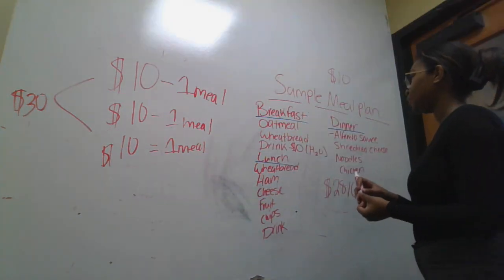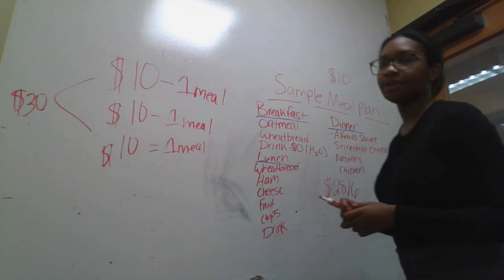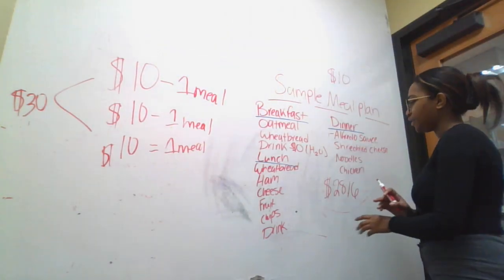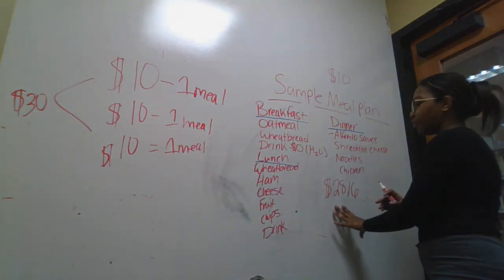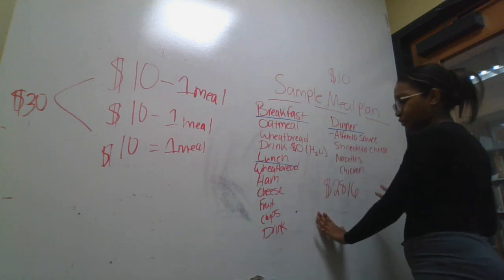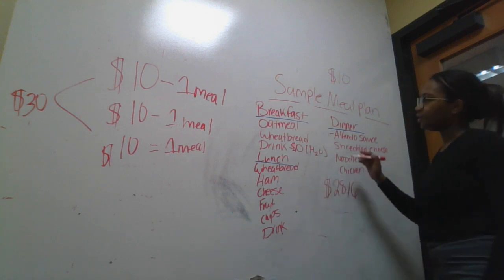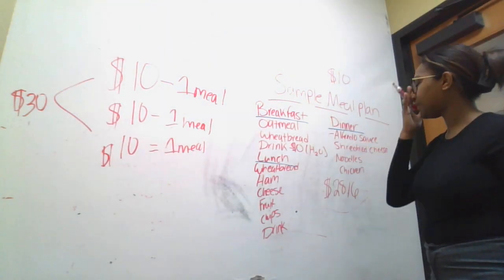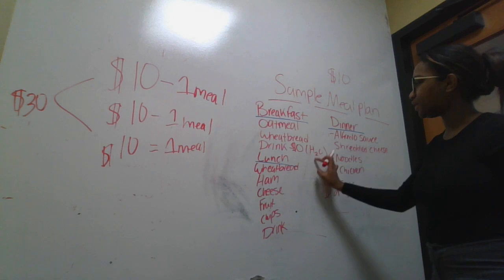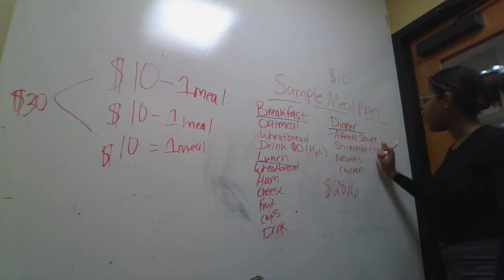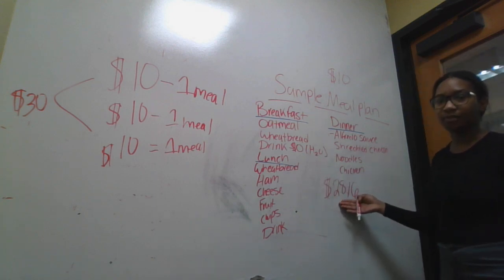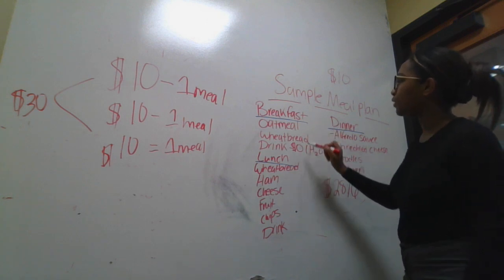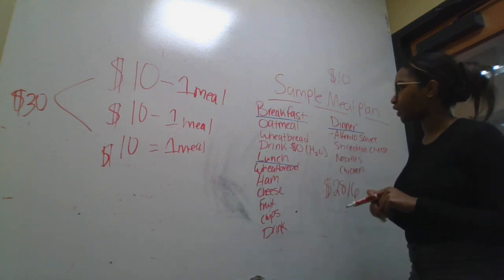So, with my sample meal plan over here, I've already created one. This is just a guide to show y'all what it would look like if y'all create your own. So, let's say for breakfast, this is what we got. The totals on the side of each item is not on here, but I have included the total amount. So, we have oatmeal, wheat bread, and a drink.